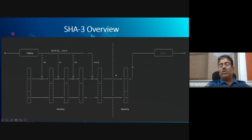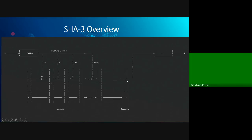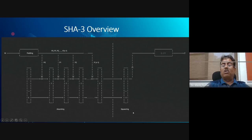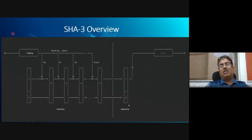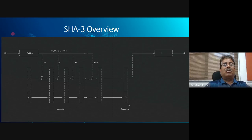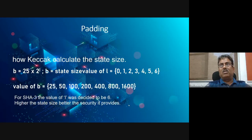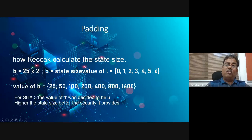After absorbing all input blocks, we move to the squeezing phase. The final 1600-bit state is divided into r and c, then the desired hash length is extracted from r. For example, if the state has 1600 bits and we need a 256-bit hash, we extract 256 bits. This compression is the squeezing phase — extracting the final hash value from the absorbed state.